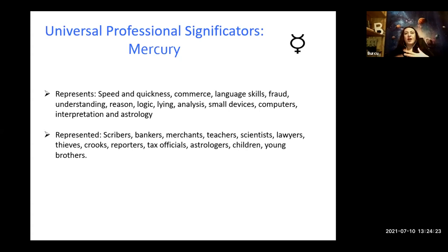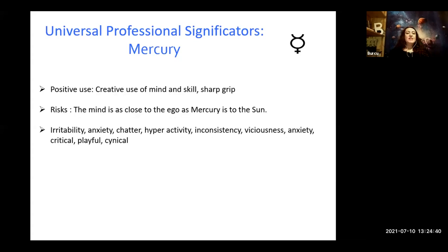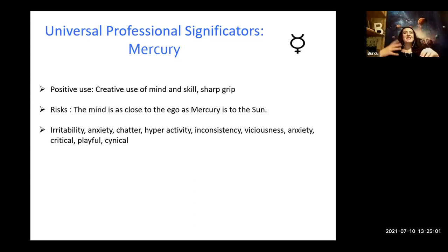Mercury is represented by scribes, bankers, merchants, teachers, scientists, lawyers, thieves, reporters, tax officials, astrologers, children, and young brothers. In positive use, Mercury gives a creative use of mind and skill and a sharp grip. But there are some risks: the mind is as close to the ego as Mercury is to the sun, so irritability, anxiety, chatter, hyperactivity, inconsistency, viciousness, being critical, playful, and cynical could all be risks.